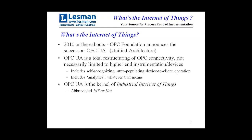Back around 2010, the OPC Foundation announced the successor to OPC DA called OPC UA — Unified Architecture — which totally restructured OPC. It would self-recognize objects out there, auto-populate the dreaded tag database, remain a server-client operation, and include analytics such as alarm notifications. OPC UA is the kernel of what people call the Industrial Internet of Things, abbreviated IIoT. So when you see IoT in the trade journals, now you have some idea what that is.